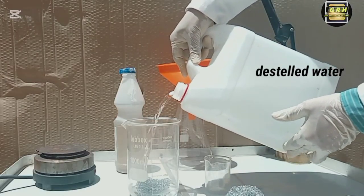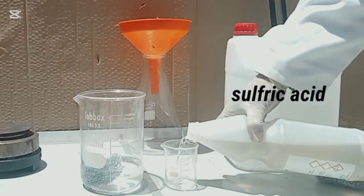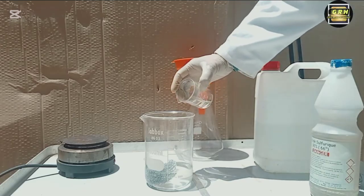Prepare a solution of 1 part sulfuric acid to 15 parts water, for example 1 cup of acid with 15 cups of water.